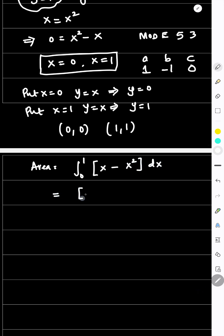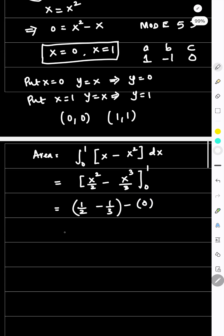So this equals x square divided by 2 minus x cube divided by 3, limits 0 to 1. Upper limit substitution: 1 by 2 minus 1 by 3. Lower limit substitution is 0. If you put this in the calculator, you get the answer 1 by 6.